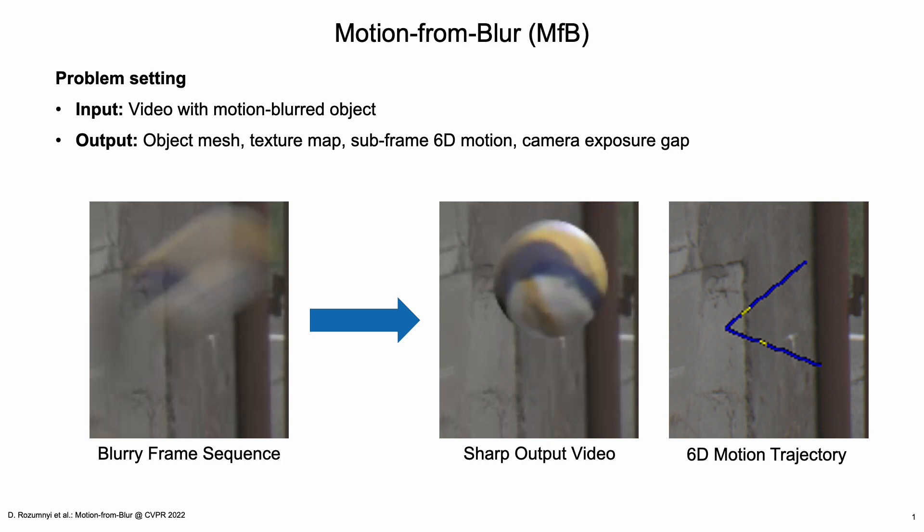We present a method that from a video with a motion blurred object estimates object mesh, its texture map, subframe 6D motion, and camera exposure gap.